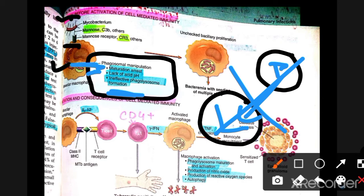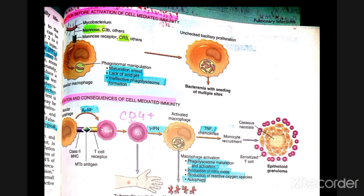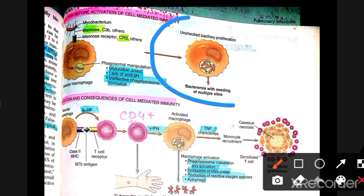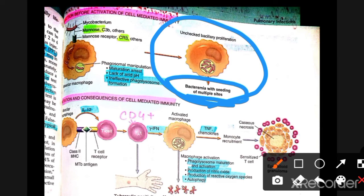Because TB bacteria prevent phagolysosome formation and block the acidic pH, macrophages cannot kill them. The bacteria survive and replicate inside the macrophages, and they are not destroyed.